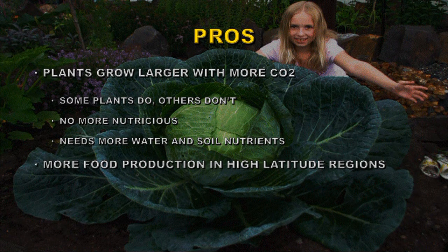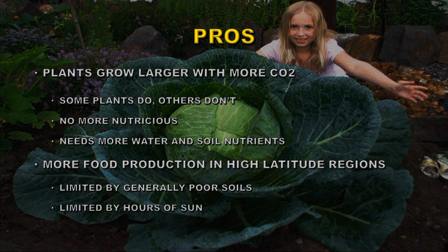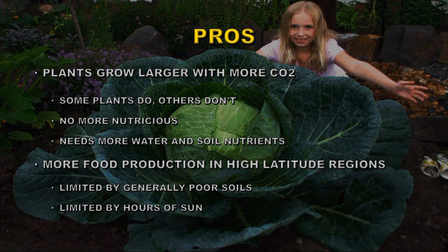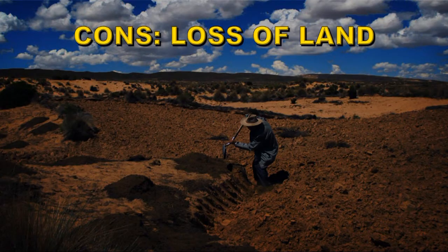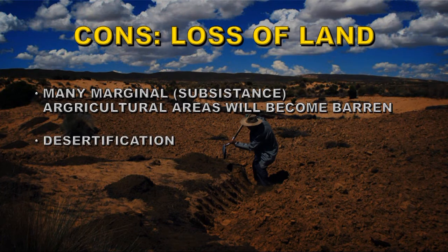It also means there'll be more food production in higher latitude regions, and that is true. However, the soils there are fairly poor and so are of limited agricultural use, and even adding more carbon dioxide to the atmosphere and warming the temperatures a little doesn't change the number of hours of sunlight that the plants receive. While some areas at high latitudes will become more agriculturally productive, many areas near the equator will become far less agriculturally productive. The deserts will spread.